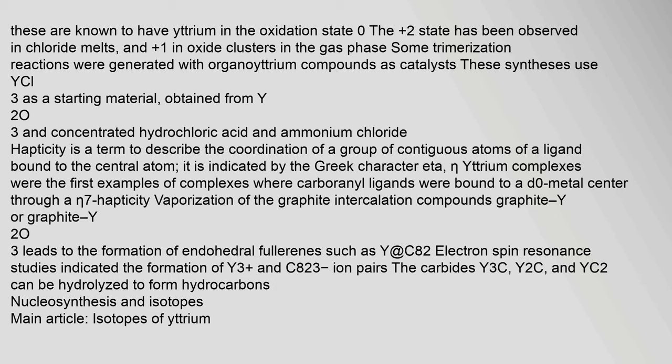These compounds are known to have yttrium in oxidation states 0 and +2. Some polymerization reactions were generated with organoyttrium compounds as catalysts, using YCl3 as a starting material obtained from Y2O3 and concentrated hydrochloric acid and ammonium chloride. Eta-yttrium complexes were the first examples of complexes where carbocyclic ligands were bound to a d0 metal center through eta-7 hapticity. Vaporization of graphite intercalation compounds leads to the formation of endohedral fullerenes such as Y@C82. The carbides Y3C, Y2C, and Y2C3 can be hydrolyzed to form hydrocarbons.